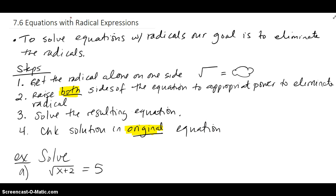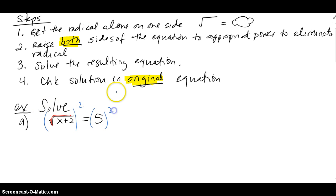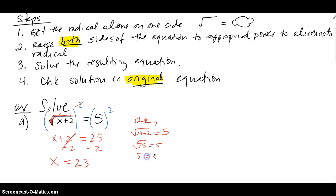For the first example, we have square root of x plus 2 equals 5. Since the square root is by itself, we square both sides. The square and the radical cancel, giving x plus 2 equals 25. Subtracting 2 from both sides gives x equals 23. Checking: square root of 23 plus 2 equals square root of 25 equals 5. It checks out.